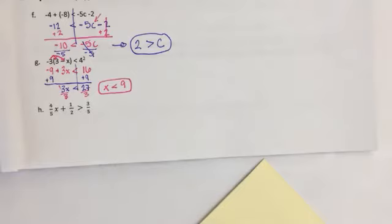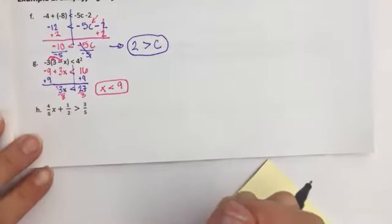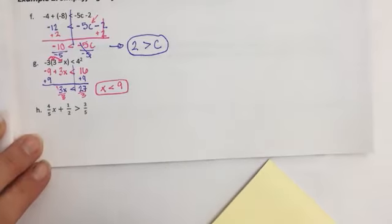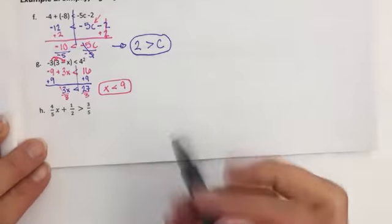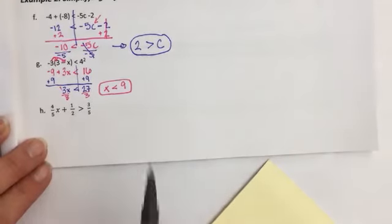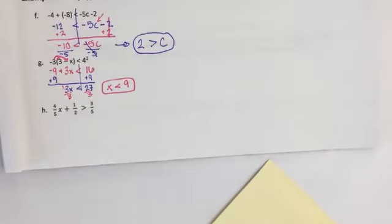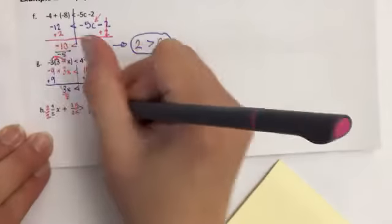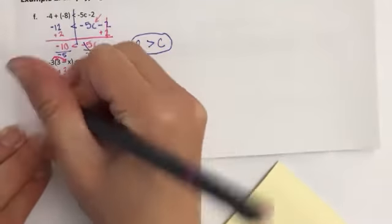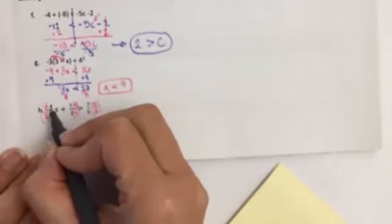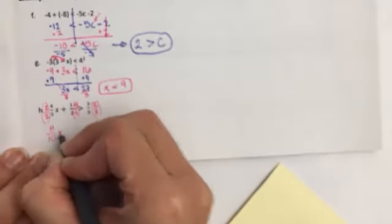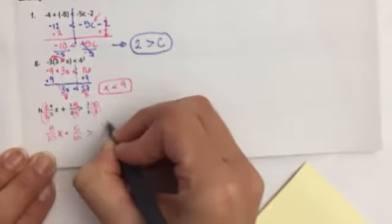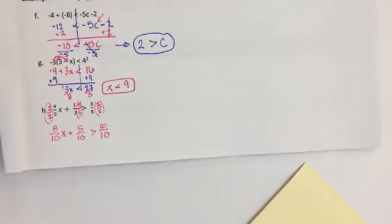Now, the next one, we did some of these with fractions before. Notice, none of your fractions have a like denominator. But if you get them to have a like denominator, you can eliminate the denominator, which is extremely helpful. So, 5 and 2 both can be multiplied to have a denominator of 10. You multiply the fifths by a 2 over 2. The halves by a 5 over 5. 2 times 4 is 8. So, 8 tenths X plus 5 tenths is greater than 6 tenths. Oh, you put 16 plus 9 is 27. Yeah, that's what I was thinking. Oh, sorry. 25.